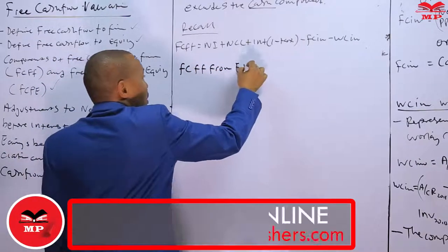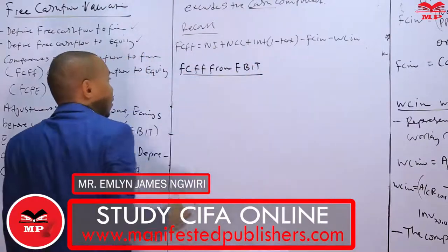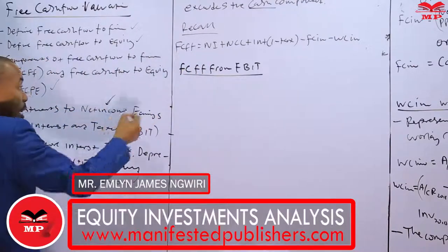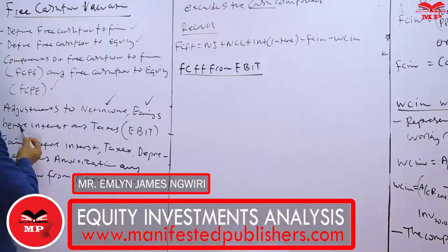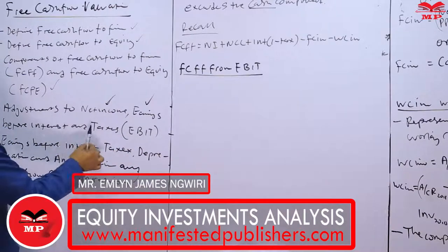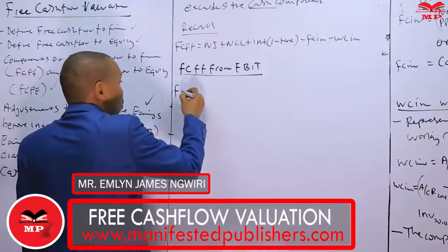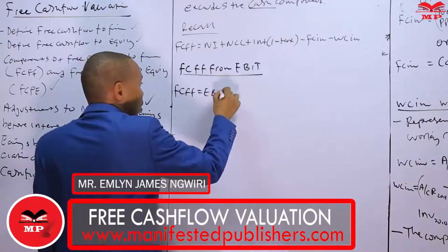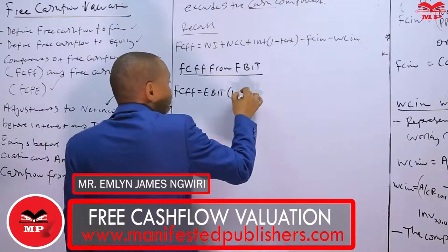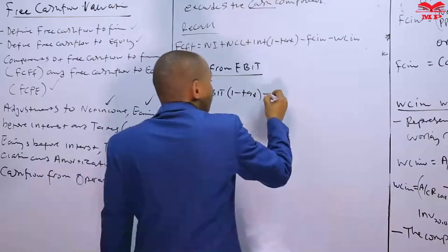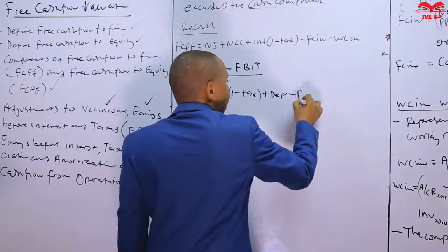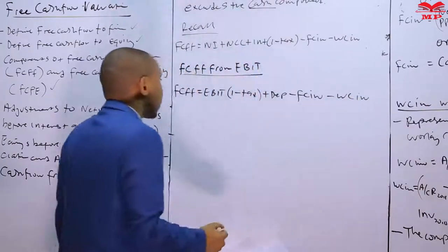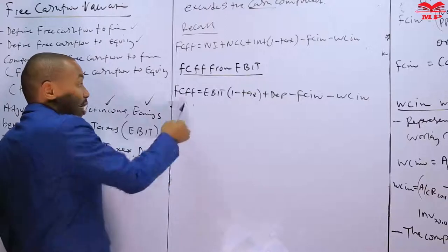Now we are trying to calculate FCFF from EBIT. We've already done the net income approach, starting from net income. Now we are moving to earnings before interest and taxes — EBIT. The formula is as follows: FCFF equals EBIT times (1 minus tax), then you add depreciation, minus fixed capital investments, minus working capital investments.